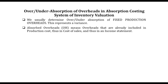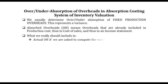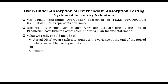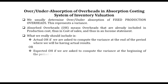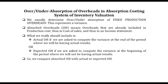Absorbed overheads could appear anywhere in production cost, in cost of sales, as well as in an income statement as a whole. What we really should include is actual overheads, if we have actual results, or expected overheads, if we do not have actual results — that is just our expectation. To know whether there is an over or under absorption, we compare absorbed overheads with actual or expected overheads.